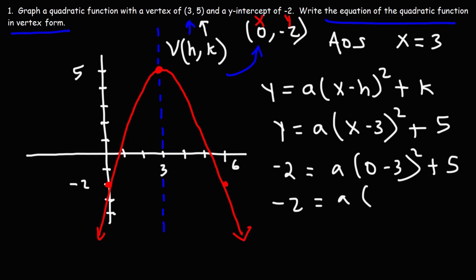Negative 3 squared. That's negative 3 times negative 3, which is 9. Now to get a by itself, we got to subtract both sides by 5. So we get -7 = 9a. So we need to divide both sides by 9 to get a by itself. So a is -7/9.